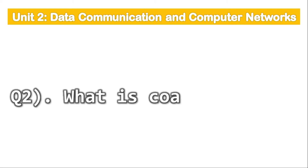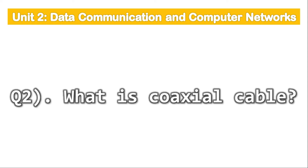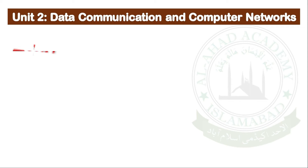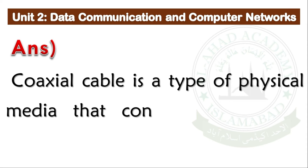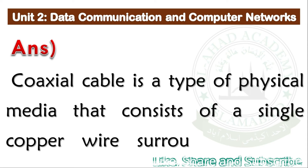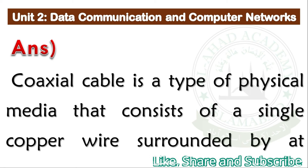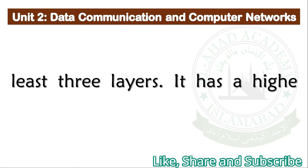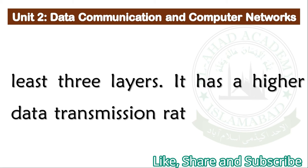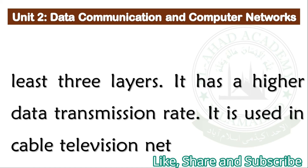Q2. What is coaxial cable? Coaxial cable is a type of physical media that consists of a single copper wire surrounded by at least three layers. It has a higher data transmission rate and it is used in cable television networks.